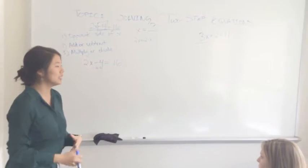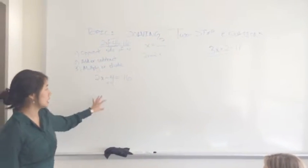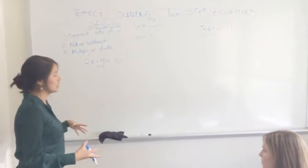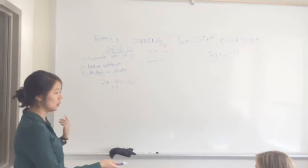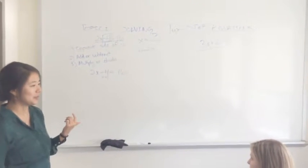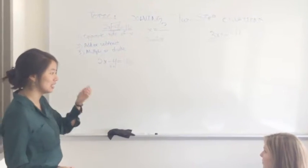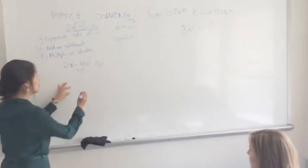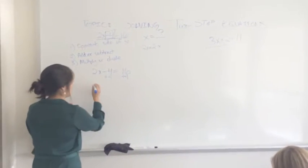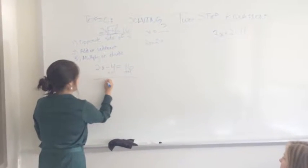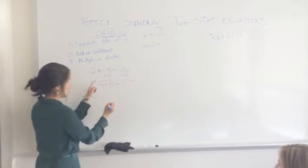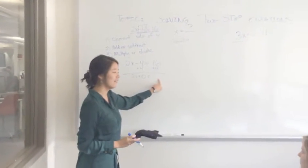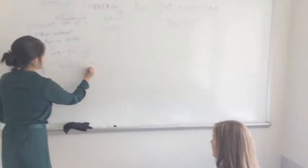But here's a really important thing that we need to remember when we're going through these types of problems. We need to remember that what we do to one side of the equation we must do to the other. Because let's say I give you all five pieces of candy, if I take two away from Sydney, she's not going to be pretty happy that you guys have five pieces of candy. So then I'm also going to have to take away two pieces from each of you guys to make it even. So I have to also add 4 to this side of the equation, which means we're going to get 2x plus 0, because negative 4 plus 4 equals 0. And what's 16 plus 4, Ashley? 20. Right.